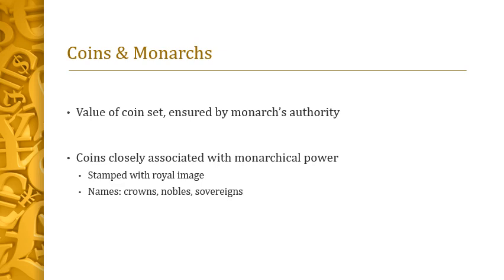In Shakespeare's time, who sets the value of the coin? It's the monarch — the authority that ultimately derives from the monarch establishes the value of the coin. Coins were closely associated with monarchical power; they were usually stamped with the royal image. In England, coins became a premier location for royal portraits, and many coin names were related to royalty: crowns, nobles, sovereigns. Even in modern times, money is associated with government authority — it's all about the Benjamins, or dead presidents, as the saying goes.